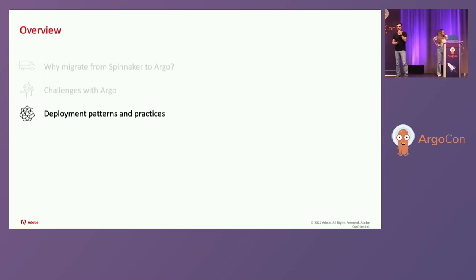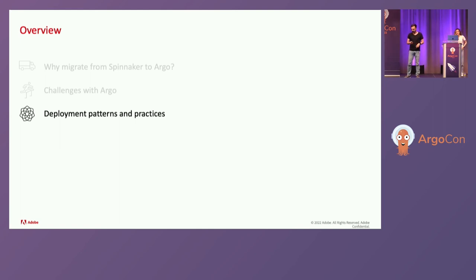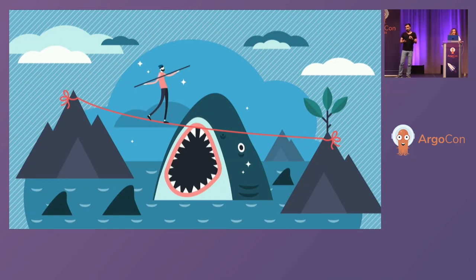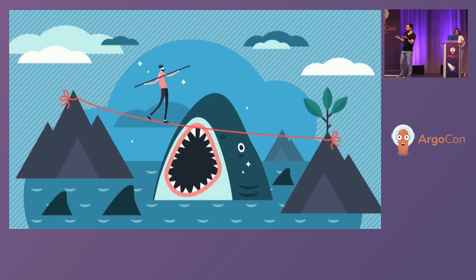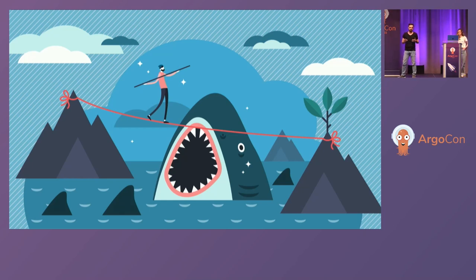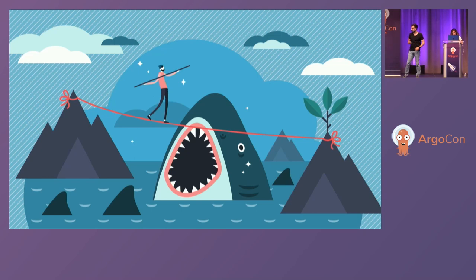So we saw why we migrated from Spinnaker to Argo, and we also looked at some of the challenges we met along the way adopting Argo. Now let's talk a bit about some patterns. Trying to build an automated pipeline that takes you from dev to stage to production is really a balancing act. It has to be fast — you don't want your developers to wait. It has to be stable — you don't want failures to occur for no reason. And it has to be safe, making sure whatever you just changed gets to production in good order.